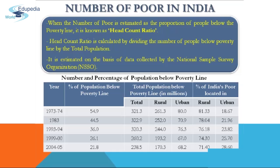When the number of poor is estimated as a proportion of people below the poverty line, it is known as head count ratio. Head count ratio is calculated by dividing the number of people below the poverty line by the total population.